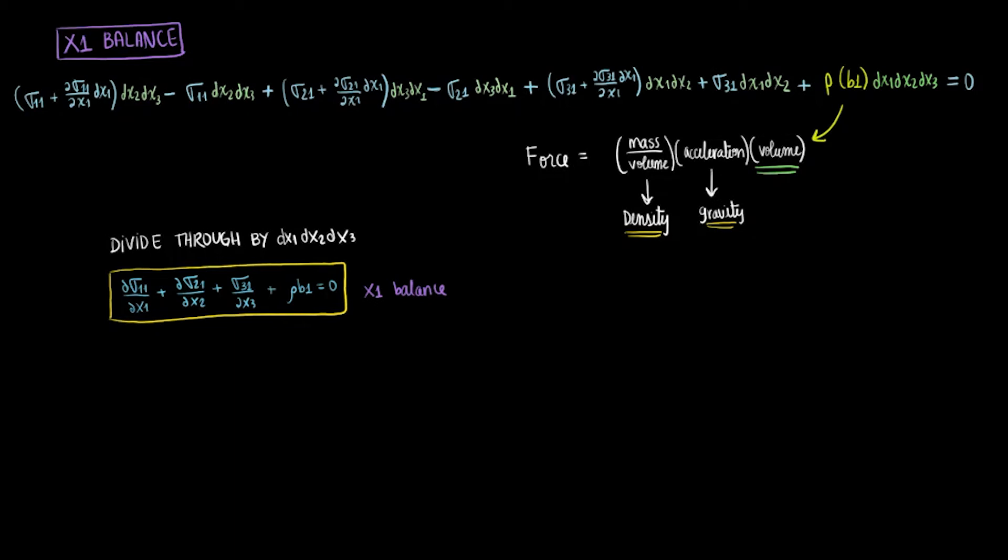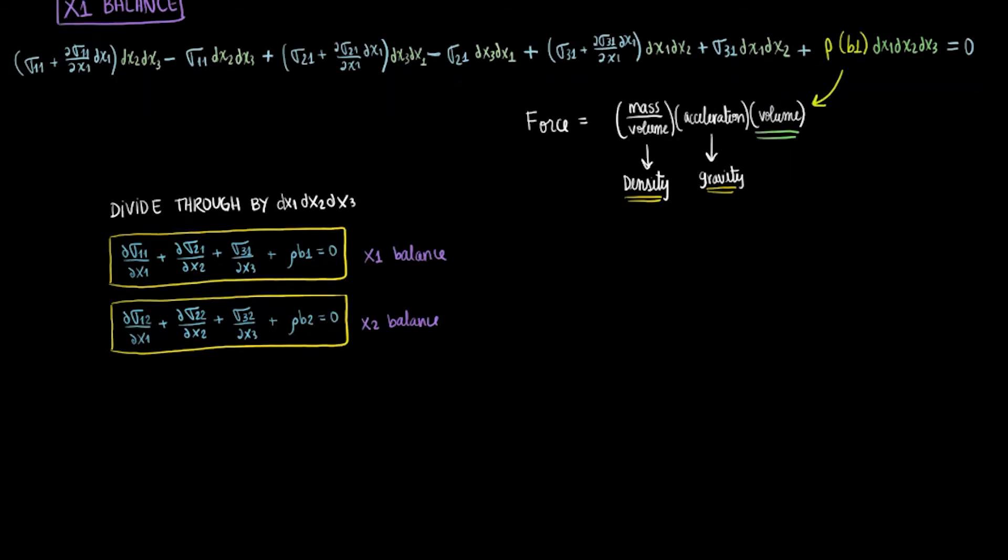We can then do the exact same thing for the x2 force balance and get a very similar equation to the one we found in the x1 balance. Notice, now the second index is 2 on all stress components and we would label b2 instead of b1 for the body force component. Still, the balance equals zero. You will get the x3 force balance similarly.